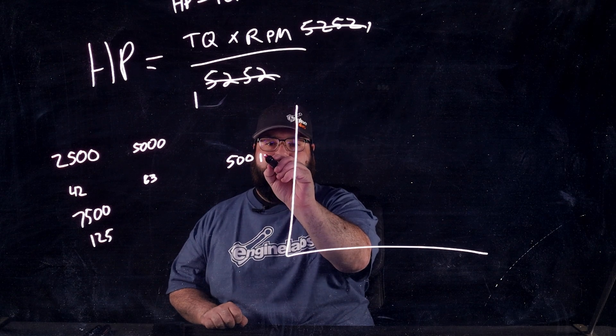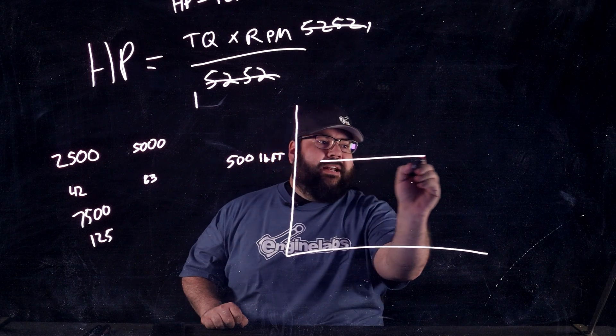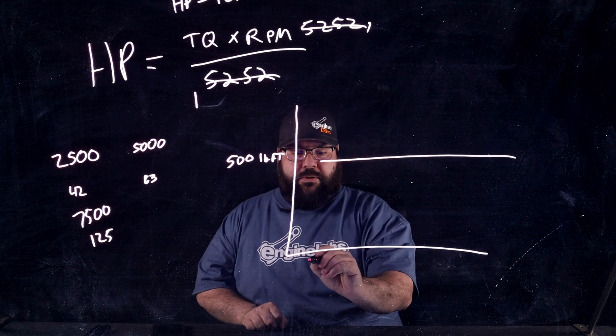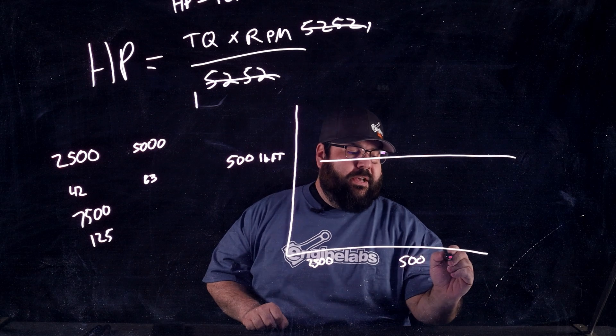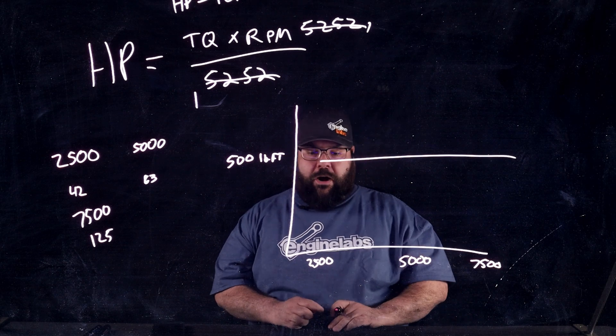And we're going to say this magical engine. And I'm not going to say magical. I've seen an engine do this, but it's not very common. All right? So, there's 500 pound-feet of torque, right? And it's going to make a nice flat torque curve. I mean, wouldn't we all kill for this engine? So, here's 2,500 RPM. Here's 5,000 RPM. Here's 7,500 RPM.